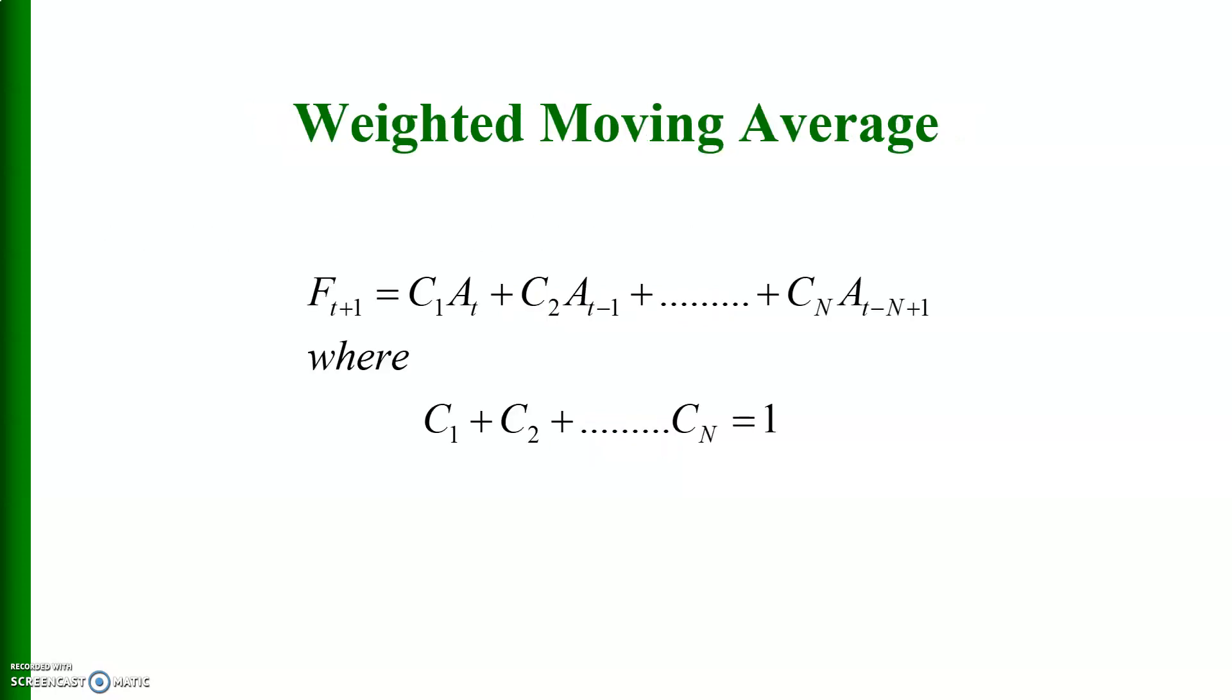This is the weighted moving average: F_{t+1} is equal to C_1 A_t plus C_2 A_{t-1} plus up to C_N A_{t-N+1}, where C_1 plus C_2 up to C_N is equal to 1.